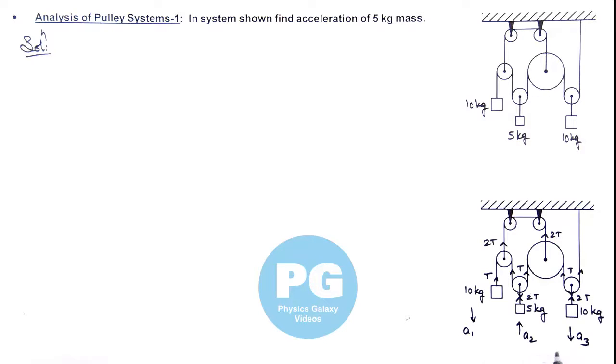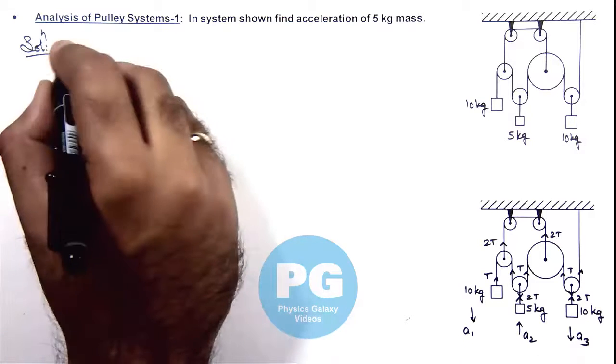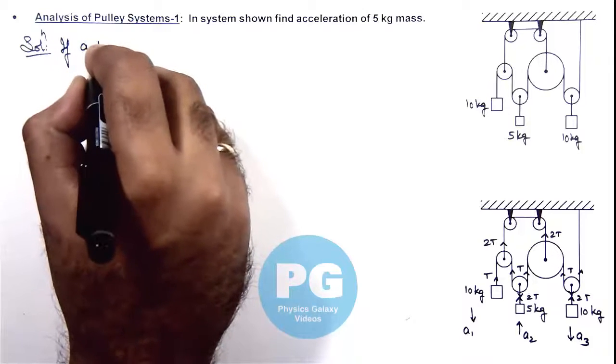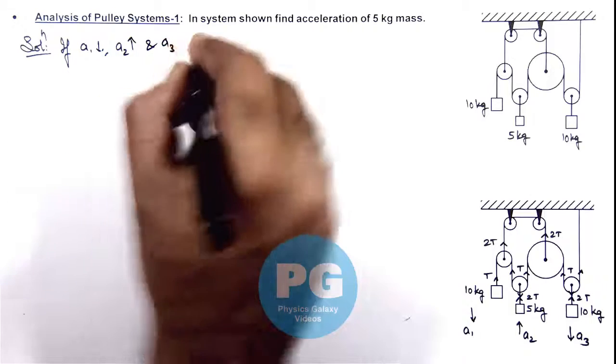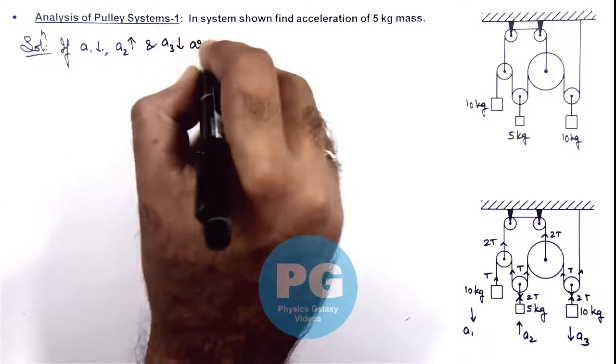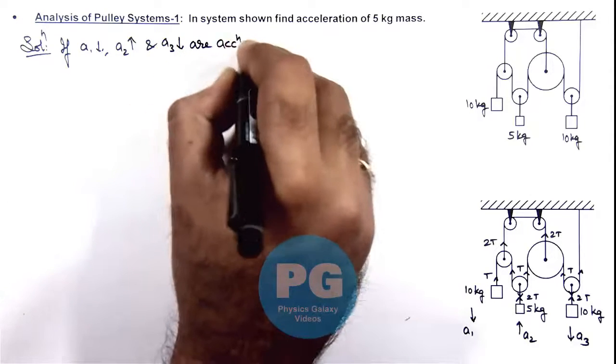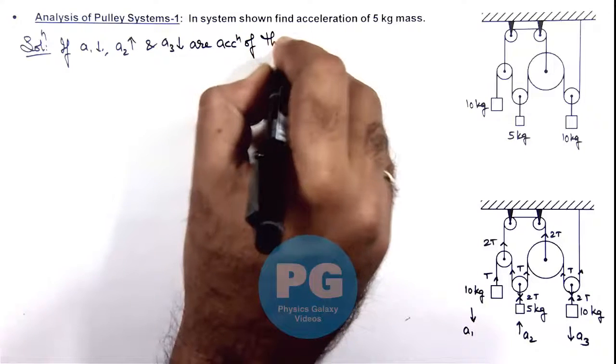After analyzing, when we calculate the values, their sign—positive or negative—will give us the actual direction, so you don't need to worry about which direction these blocks are moving. We can write: if a_y1 is in the downward direction, a_y2 in the upward direction, and a_y3 in the downward direction, these are the accelerations of these blocks.